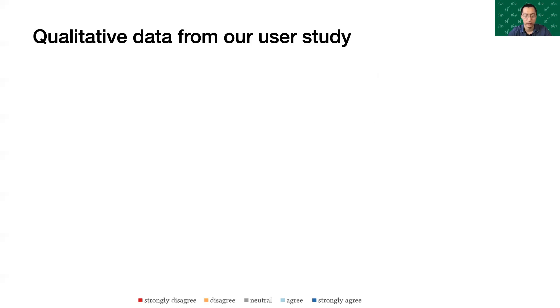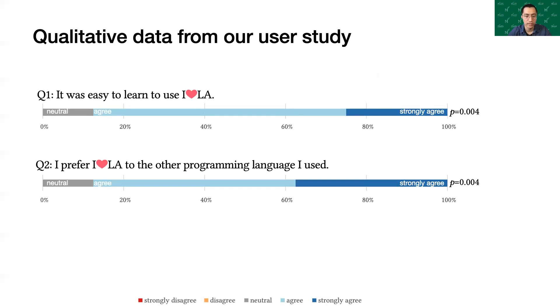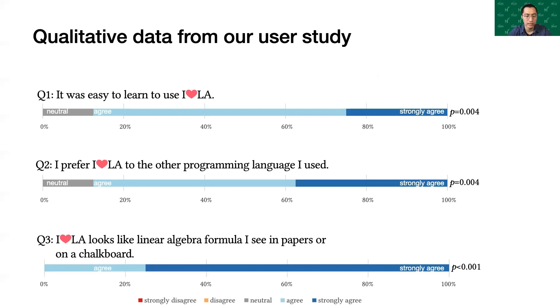We asked three questions to assess participants' perceptions about I❤LA, on a five-point Likert scale ranging from strongly disagree to strongly agree. The first question is whether it was easy to learn to use I❤LA. The second question is whether they prefer I❤LA to the other programming language. The last question is whether I❤LA looks like a linear algebra formula in papers or on a chalkboard.